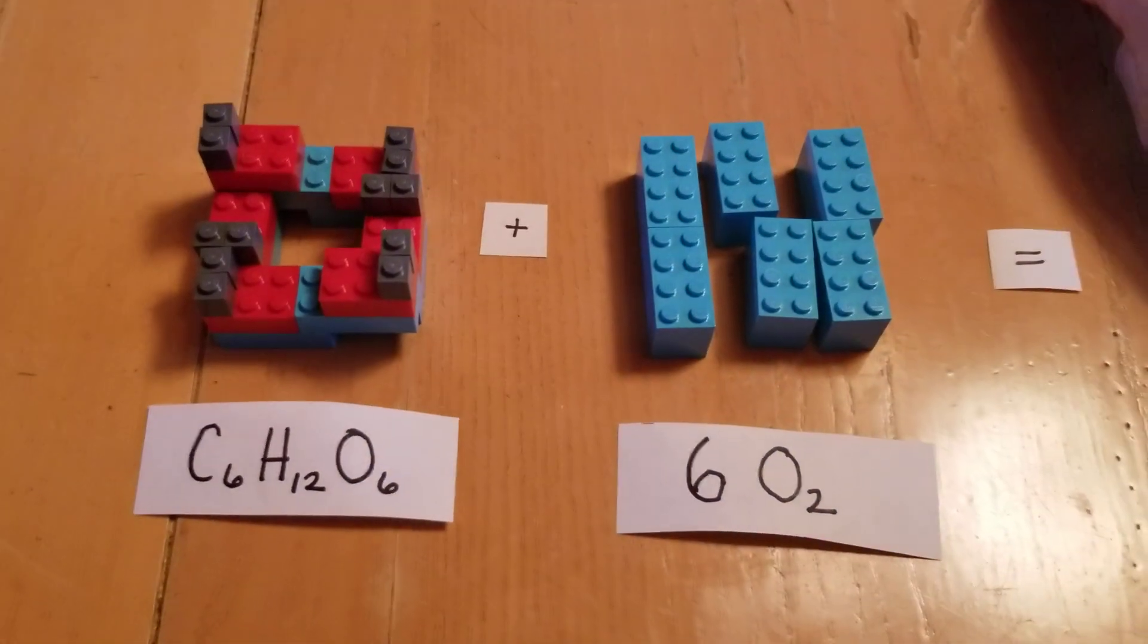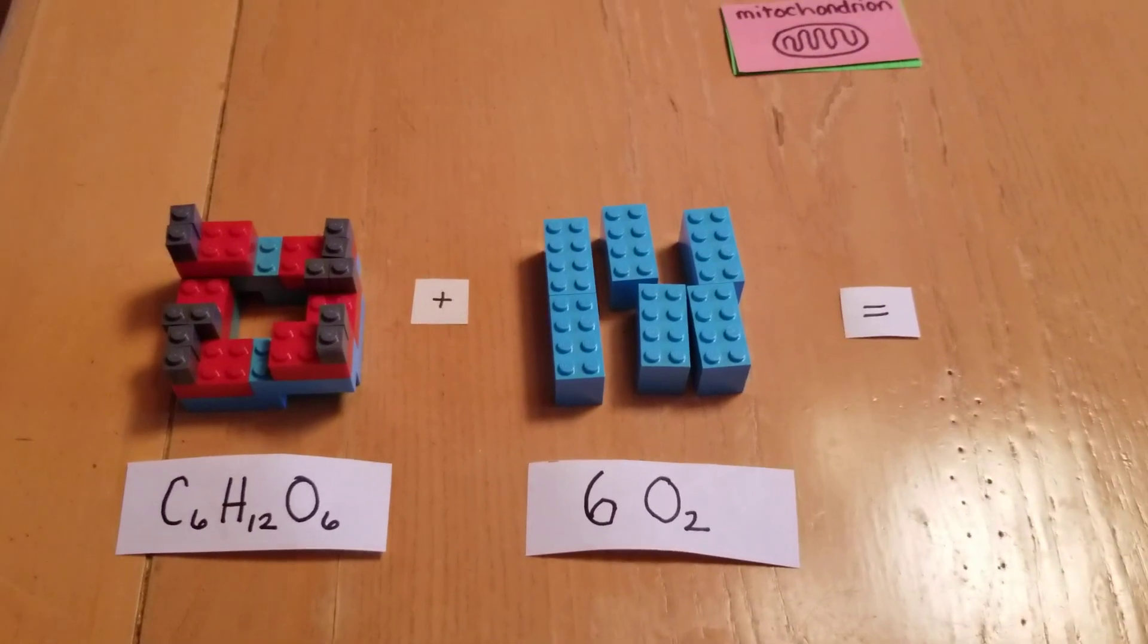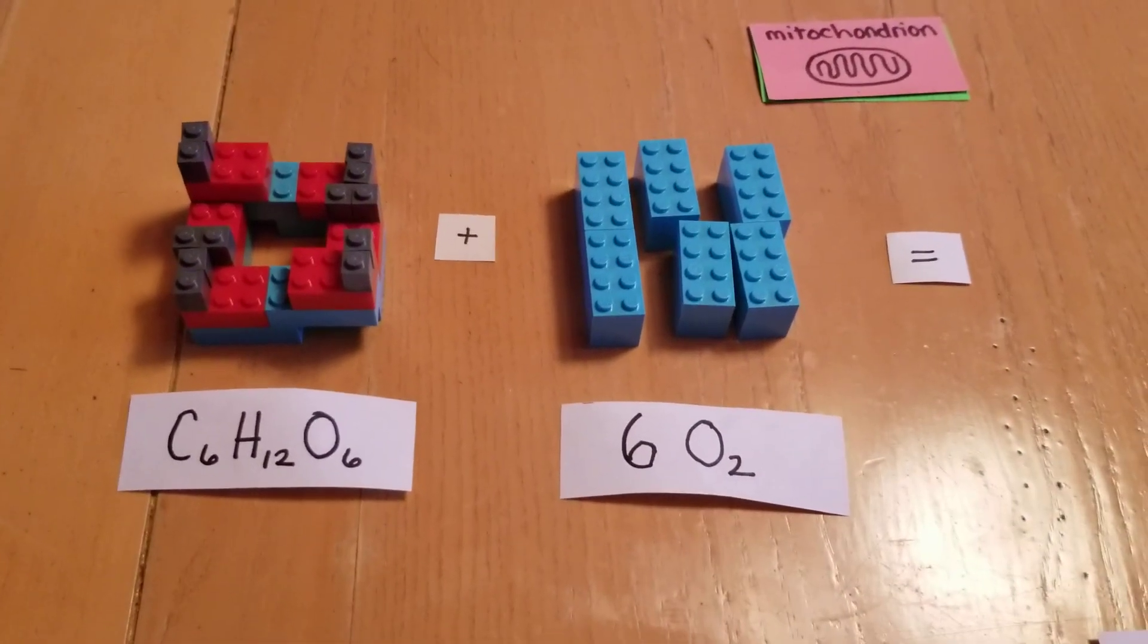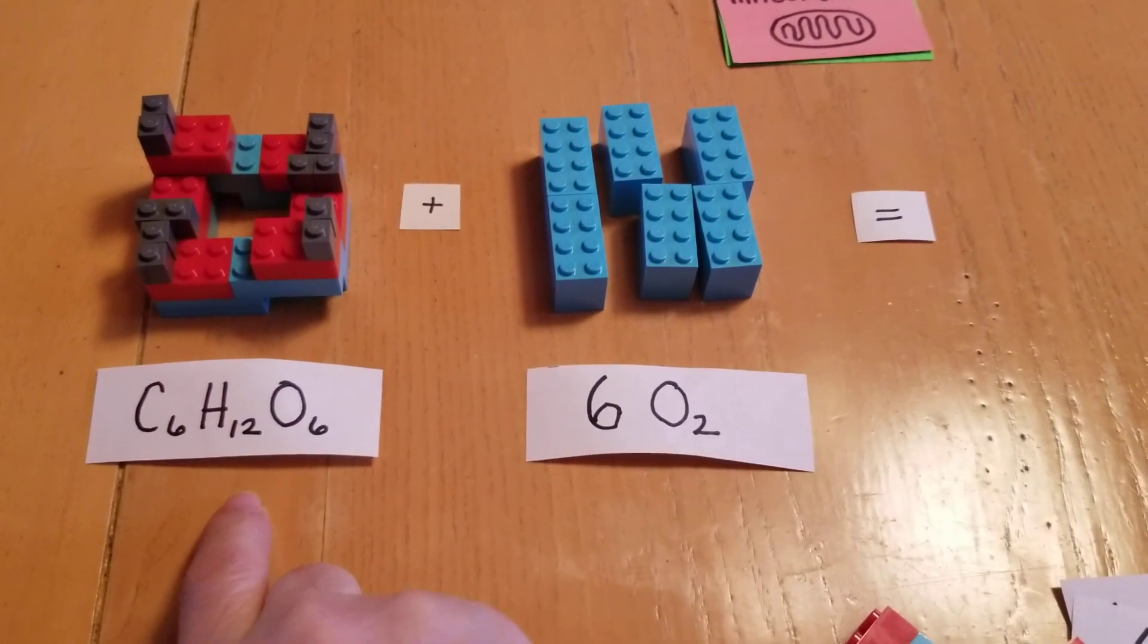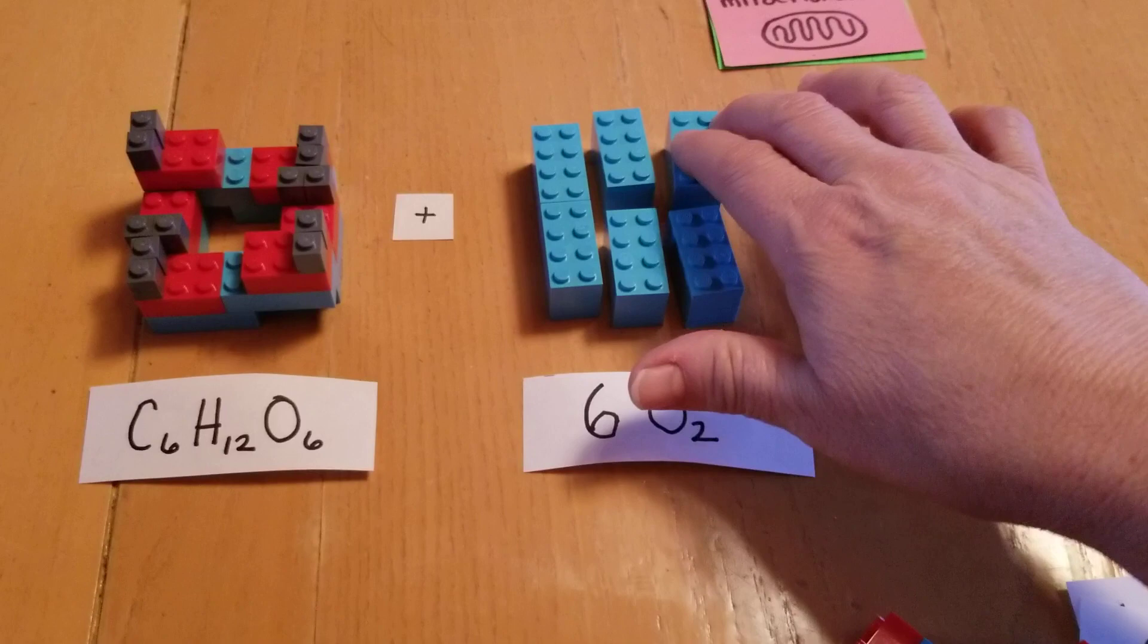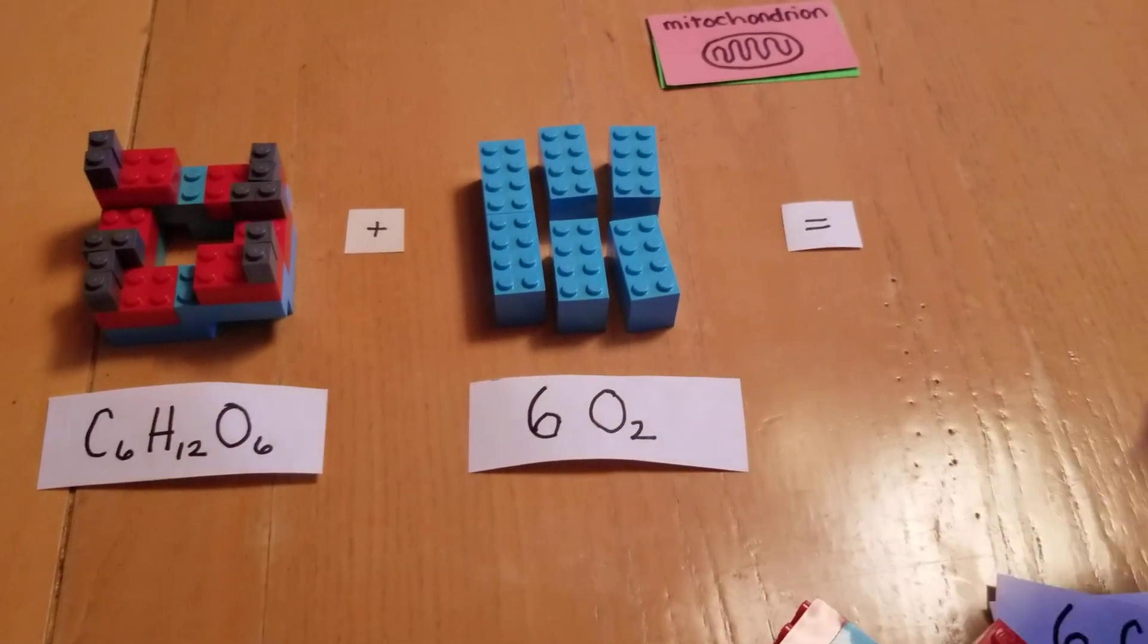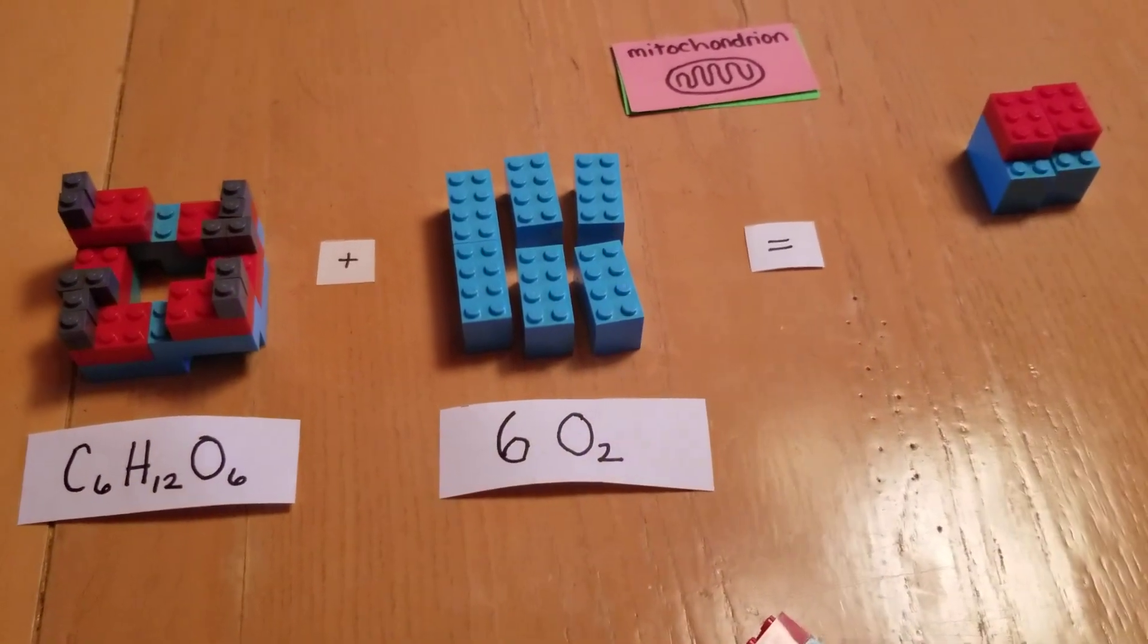And what's going to happen is that the mitochondria, the powerhouse that it is, breaks down through a chemical reaction this glucose along with the oxygen and recreates the reactants as a byproduct.